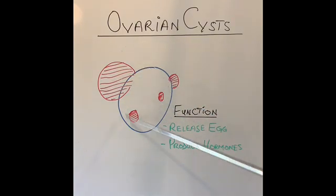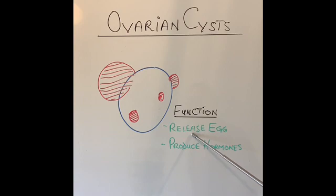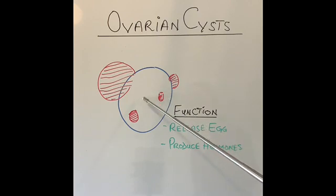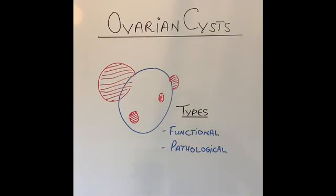To understand ovarian cysts, we need to understand the function of the ovary. The ovaries perform two main functions: one is the release of an egg or ovum every 28 days during the menstrual cycle, and the second is to produce the female hormones estrogen and progesterone.